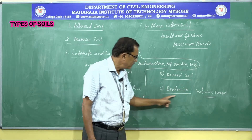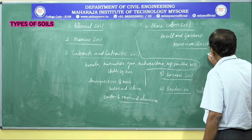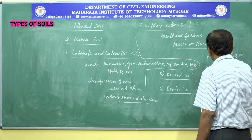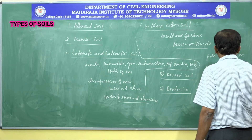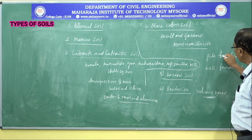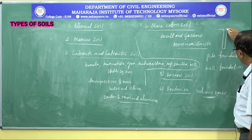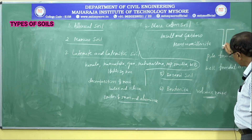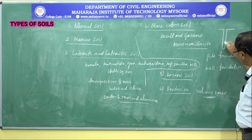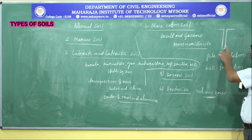Bentonite is used as a stabilizing material, particularly in the case of pile foundation and well foundation — both of which are deep foundations. During construction of pile foundations, piles are driven to or cast at a greater depth, until hard strata is reached. Boreholes are made and after making the borehole, the pile is cast.